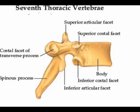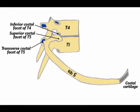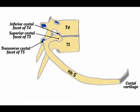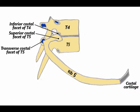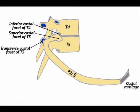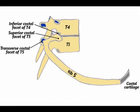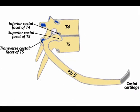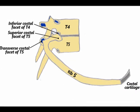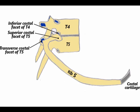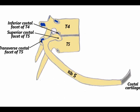The heads of ribs number 2 through 10 articulate with two demifacets on vertebral bodies: one superior demifacet of the same numbered vertebral body, and one inferior demifacet of the next adjacent superior vertebrae.